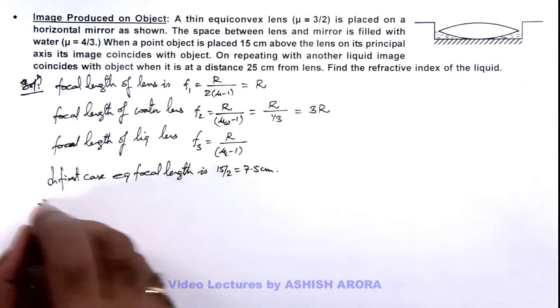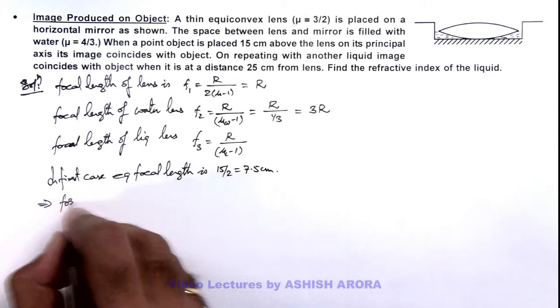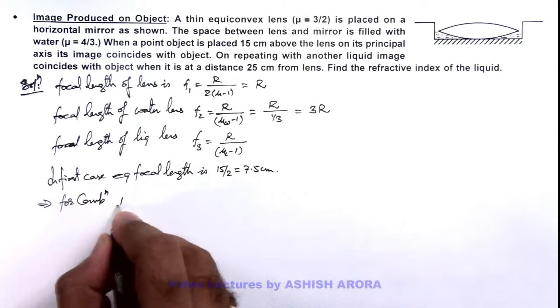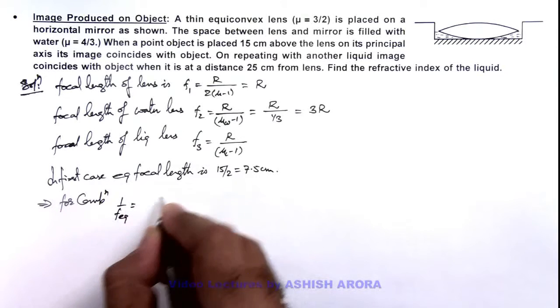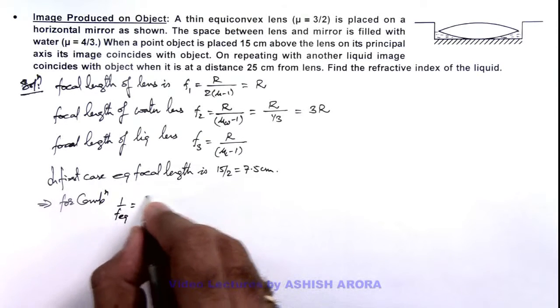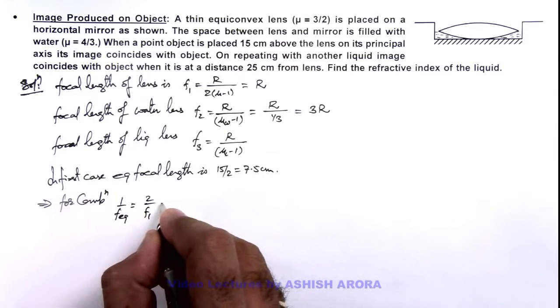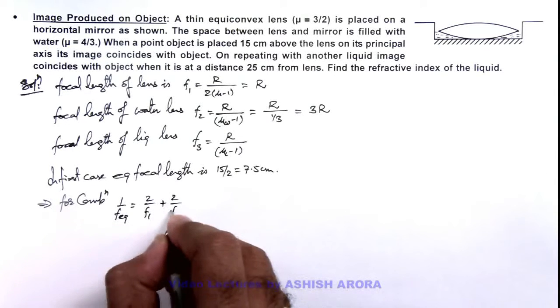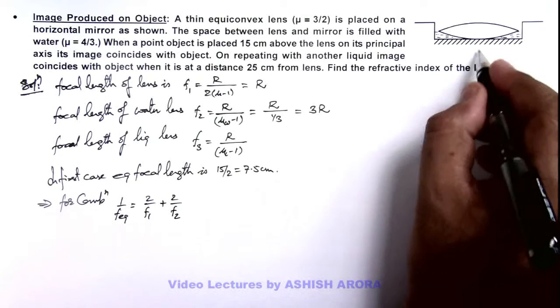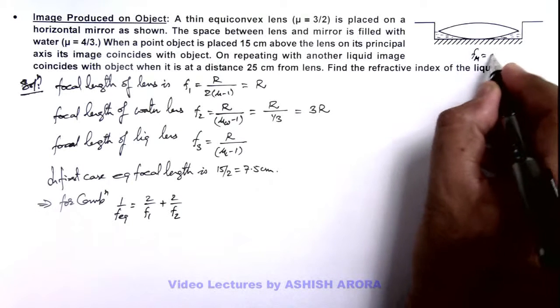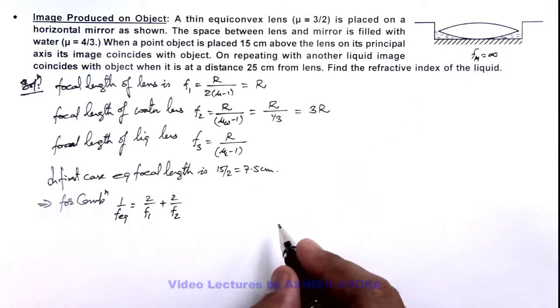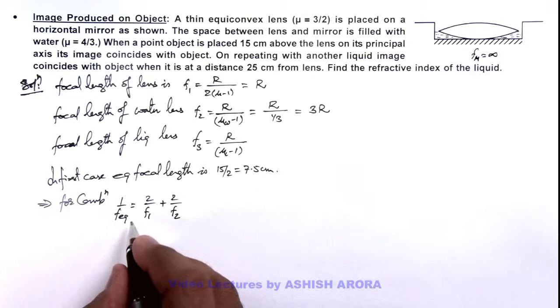Then this implies for combination here we can write 1 by equivalent focal length, 1 by 7.5 is equal to 1 by f1 plus twice of 1 by f2. And as mirror is a plane mirror we can take focal length of mirror is equal to infinity in this situation.